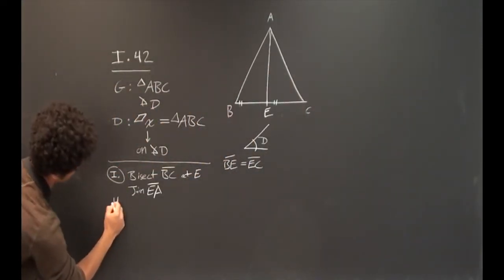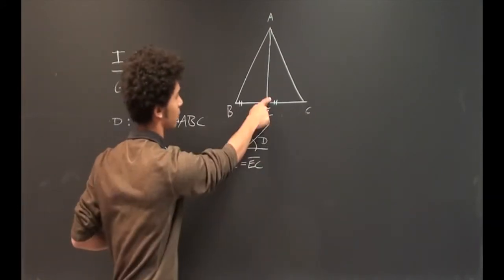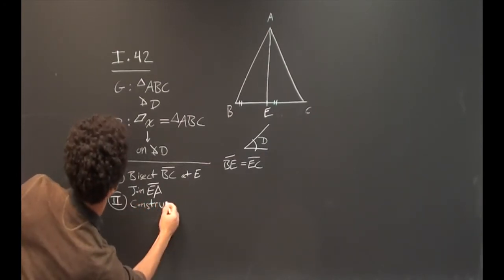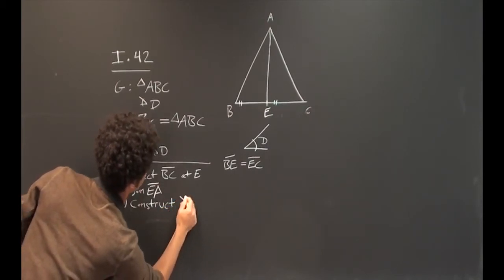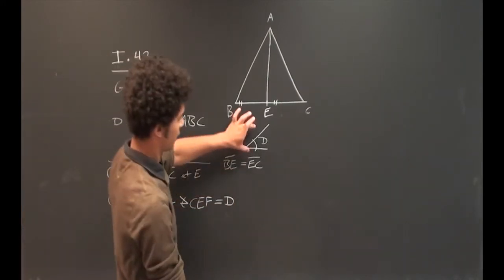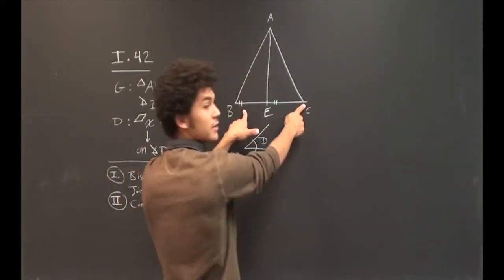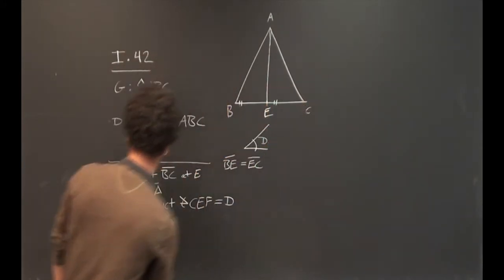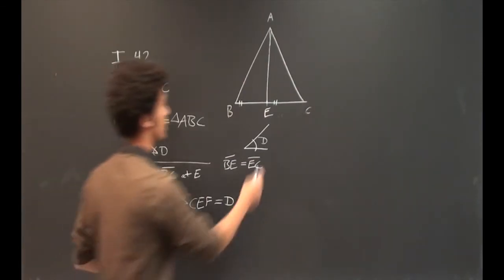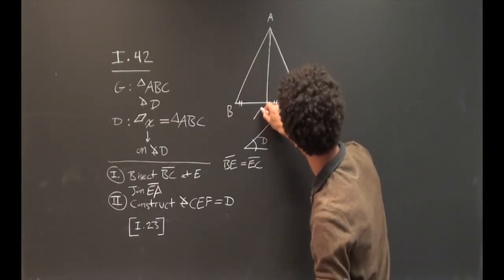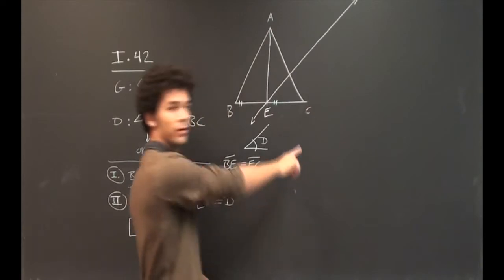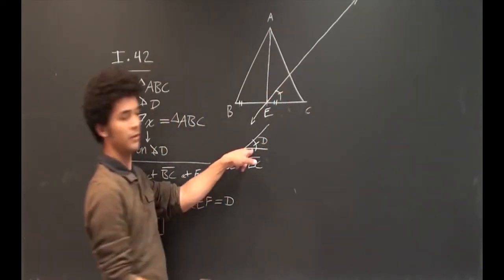Our second step: we're going to construct angle CEF equal to angle D. We take an angle equal to the given angle D and construct it on line BC at point E. We can do this by Proposition I.23. The angle here at E is equal to the given angle D.